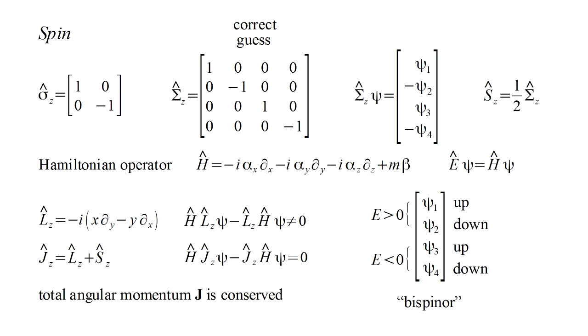We can now interpret the four wavefunction components as follows. Components psi 1 and psi 2 correspond to spin up and spin down positive energy states. In a non-relativistic theory, this two-component spinner would fully specify an electron state. Components psi 3 and psi 4 correspond to spin up and spin down negative energy states. It's natural to view this as a second spinner and refer to all four components as a bispinner or a four-spinner. However, it's still hard to see what, if anything, the negative energy spinner represents.